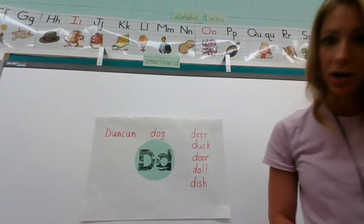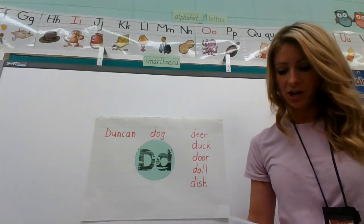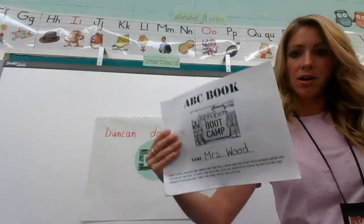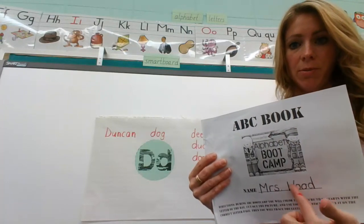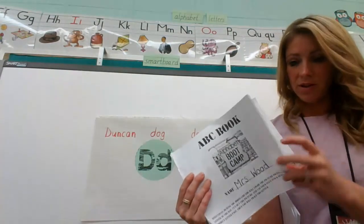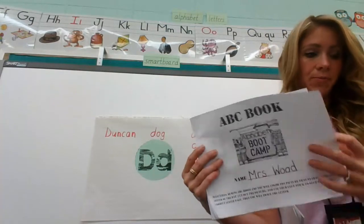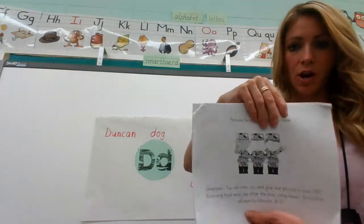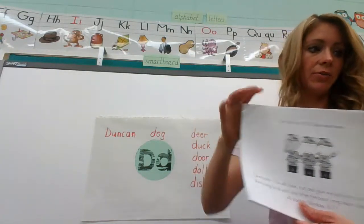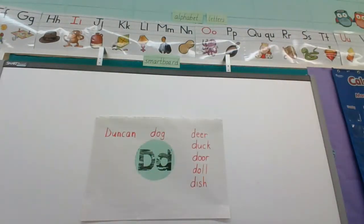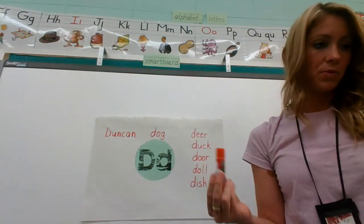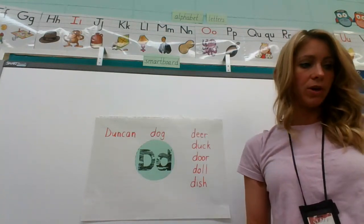You probably already know what to get out, but I'm going to remind you just in case. Out of your white box, you need to get the book that looks like this — it's got 'ABC book' at the top. Hopefully you put your name in there like I put my name in there. That's the one that has all the pictures you've already done. Then you need to get the one with the three army guys on top that has the new picture you're going to color. You need crayons, scissors, and glue.